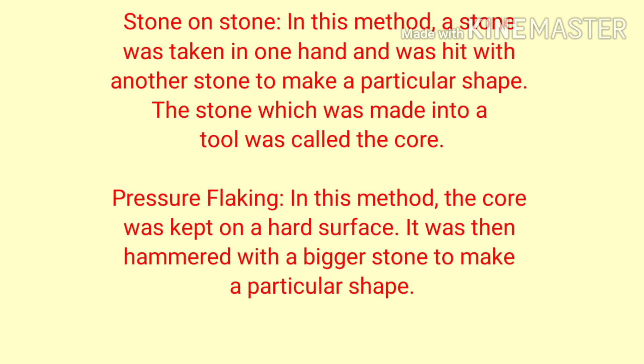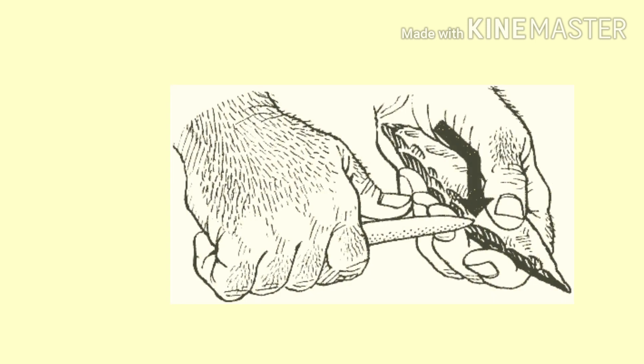Historians have found proofs at factory sites — much larger stones and some unfinished tools — confirming these were locations of factory sites. There were two possible methods of making stone tools: A. Stone on stone — a stone was taken in one hand and hit with another stone to make a particular shape; the stone being shaped was called the core. B. Pressure flaking — the core was kept on a hard surface and then hammered with a bigger stone to make a particular shape.